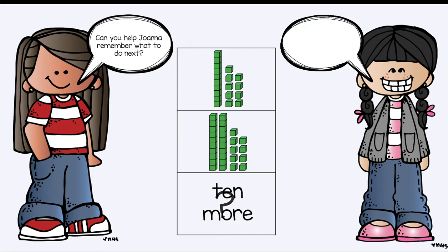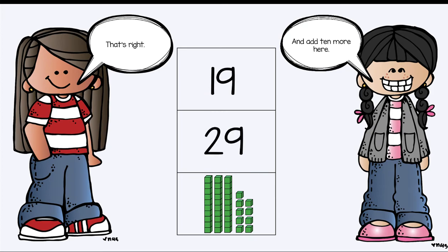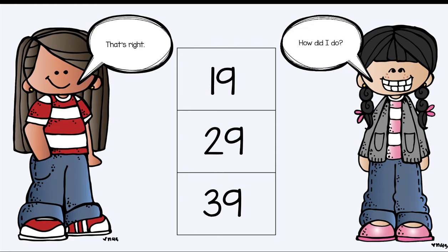So now we need to find 10 more. Add 10 more here. Great job. That's right. 19, 29, and 39. How did I do? You did great, Joanna, and so did you, kings and queens. Thanks for your help, friends.